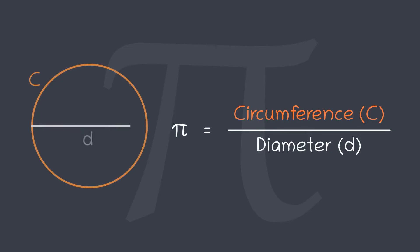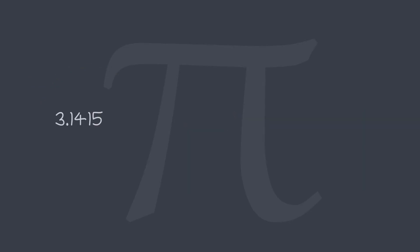Pi is the ratio of circumference of a circle to its diameter and its value goes like 3.1415 etc. Pi cannot be written as a fraction of two whole numbers but we usually take the fraction 22 by 7 as the approximate value of pi.